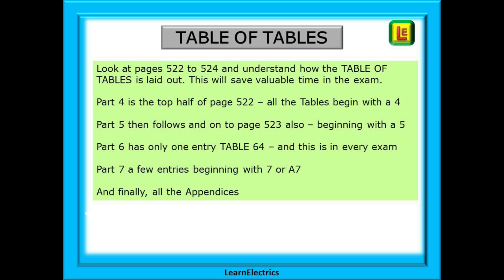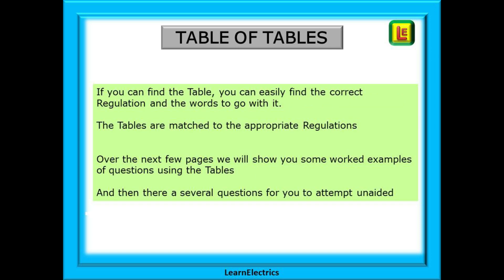Let's begin. Look at pages 522 to 524 and understand how the Table of Tables is laid out — this will save you valuable time in the exam. Part 4 of the regulations is covered by the top half of page 522, and all the tables begin with the number 4. Part 5 tables then follow and continue on to page 523, and these all begin with the number 5. Part 6 has only one entry, Table 64, and a question on this table is in almost every exam. Part 7 has a few entries beginning with 7 or A7, and finally all the appendices. If you can find the table, you can easily find the correct regulation and the words to go with it.